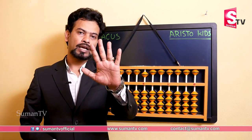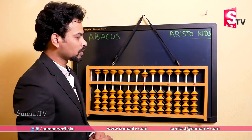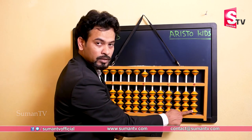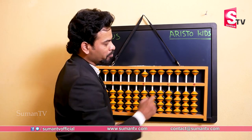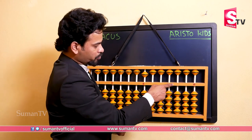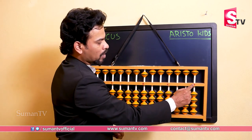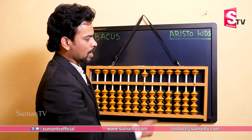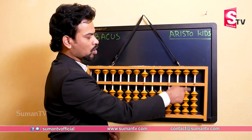Basically there are five parts. The first part is lower bead. The second part is upper bead. The third part is beam. The fourth part is unit dot, and the fifth part is rod.